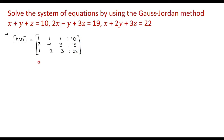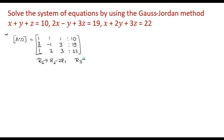We have to reduce this matrix to the diagonal matrix using elementary row transformations. To reduce the matrix to diagonal form, we will reduce the element 2 and 1 in the first column to 0 using R1. So R2 changes as R2 minus 2·R1, and R3 changes as R3 minus R1.